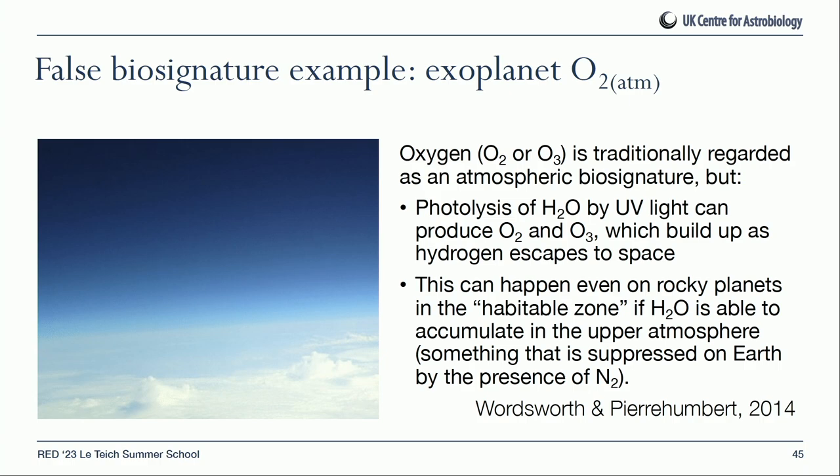That doesn't mean these structures are not fossils, but it does mean a range of non-biological processes should have been considered. Regarding atmospheric oxygen as a biosignature, we do know there are pathways producing oxygen and ozone in planetary atmospheres through photolysis of water by UV light, and in certain planetary systems oxygen can accumulate as hydrogen is lost to space — even on rocky planets in the habitable zone. Papers exploring the possible range of non-biological false biosignatures in advance are important work that helps prevent repeating past mistakes.